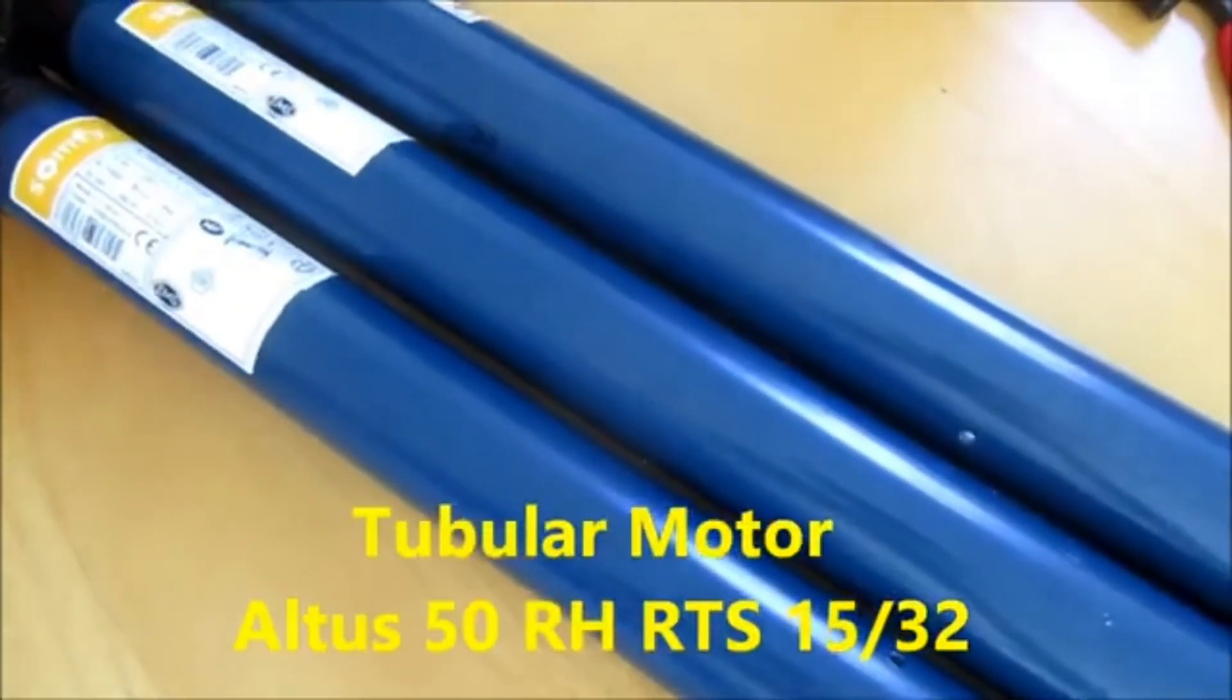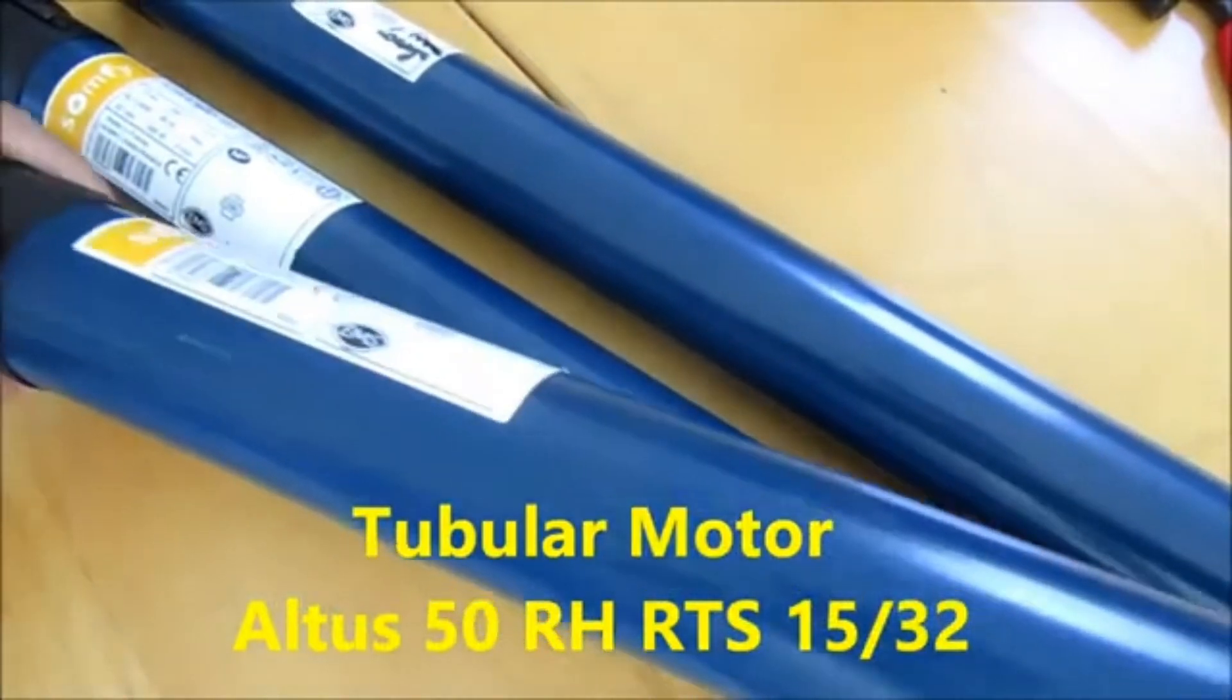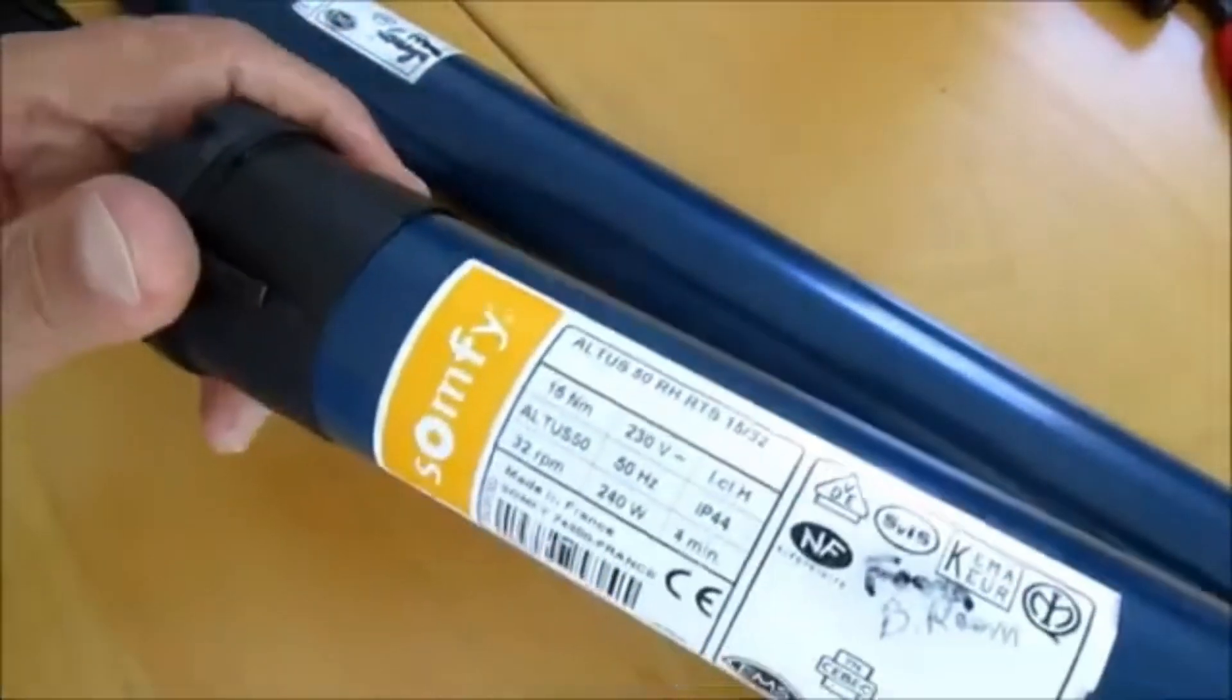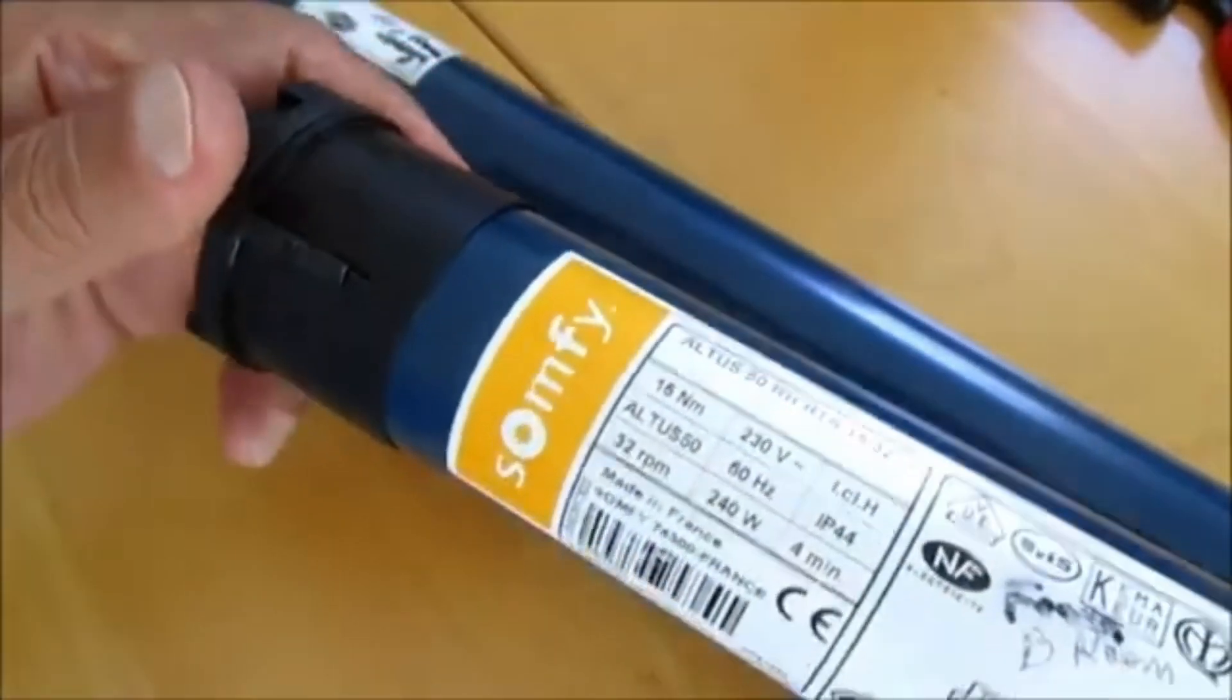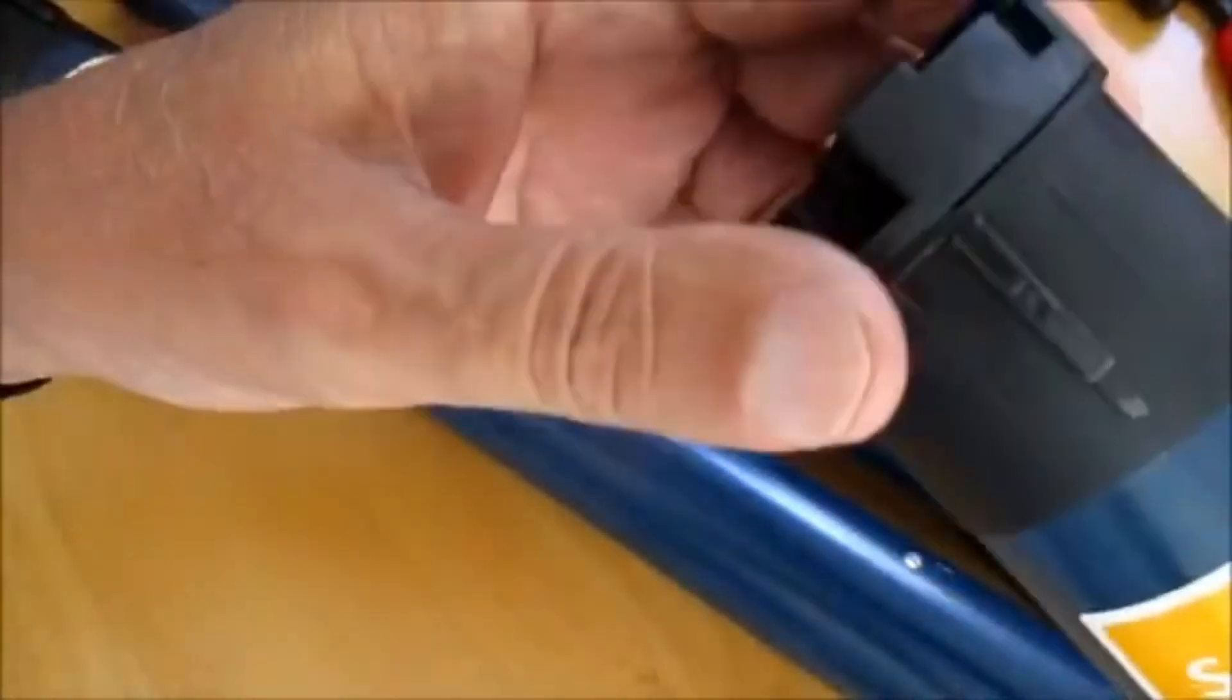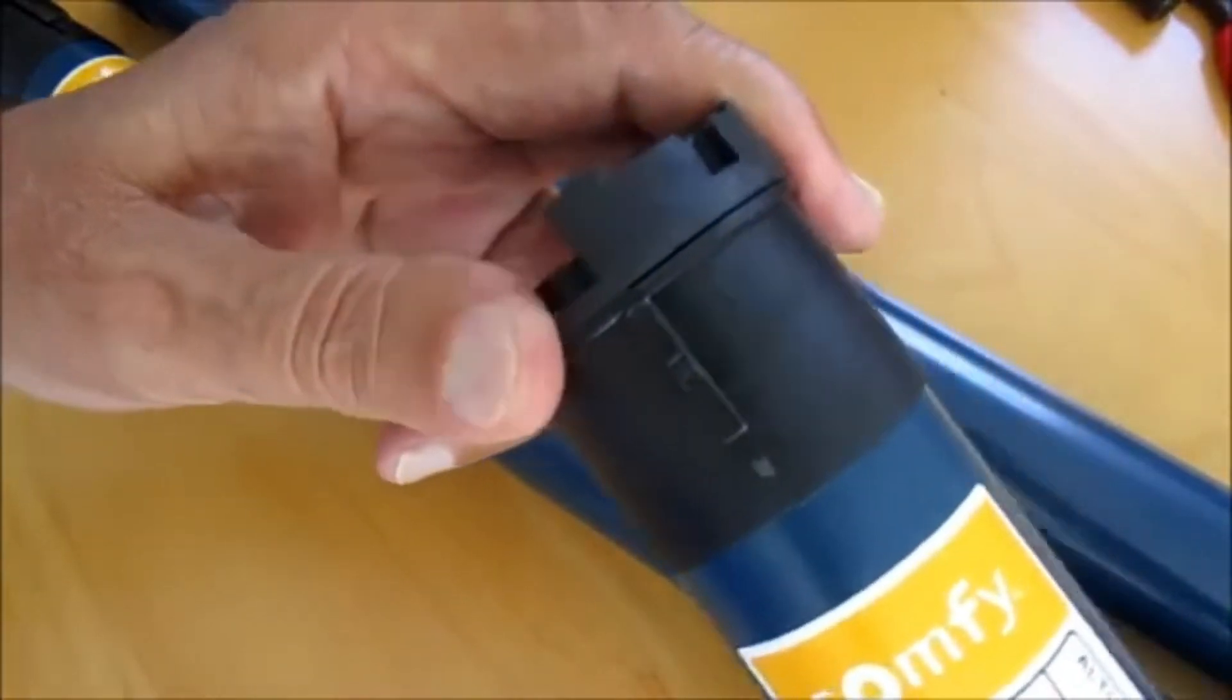Hello everyone, today I want to look at these roller blind motors, tubular motors. We have three of them here and they've all been replaced because they're not working. I'm just curious to see what's inside and why they stopped working.